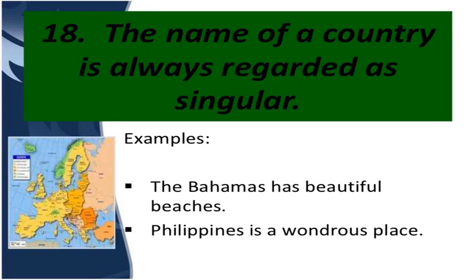The next rule: the name of a country, even if its form is plural, is regarded as singular. For example, 'the Bahamas has beautiful beaches.' It is the name of a country, so it is always regarded as singular. Similarly, 'Philippines is a wondrous place' — Philippines ends in 's', its form is plural, but it is the name of one country only, so it is treated as singular.